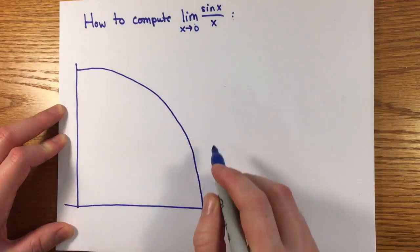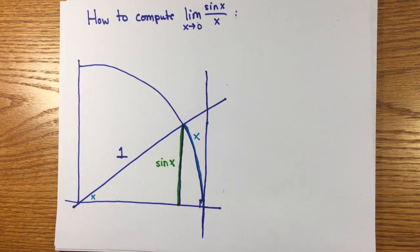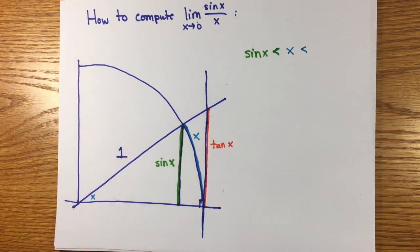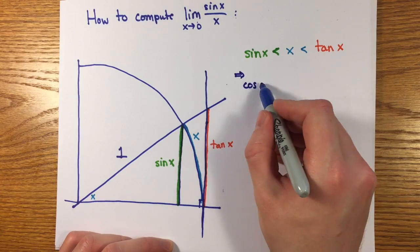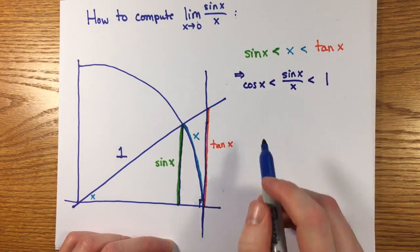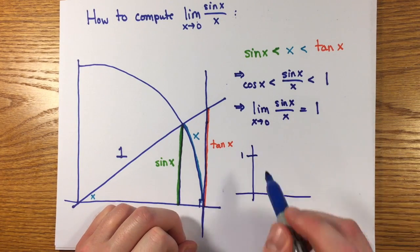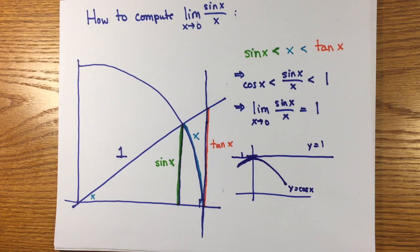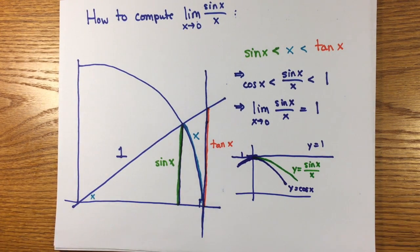So computing the key limit, sine x over x, involved bounding the length of an arc between the lengths of two straight segments. To obtain the inequalities, sine x is less than x, which is less than tangent of x, for x greater than zero in the first quadrant. With these inequalities, you can show that cosine x is less than sine x over x is less than 1, and then the squeeze theorem gives that the limit of sine x over x as x goes to zero is 1.